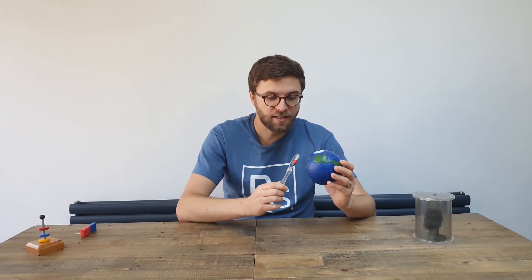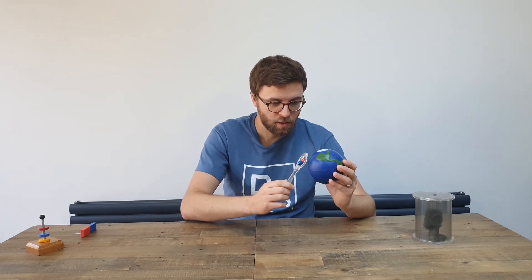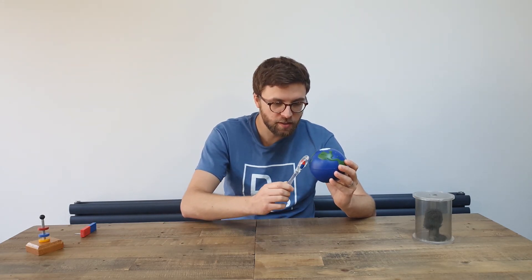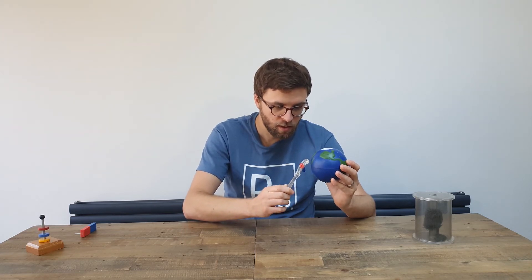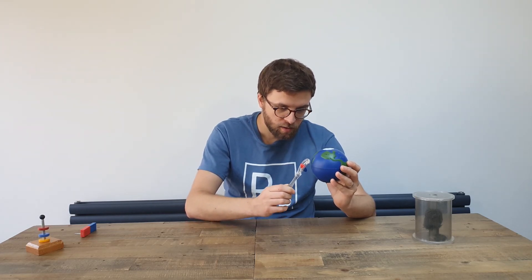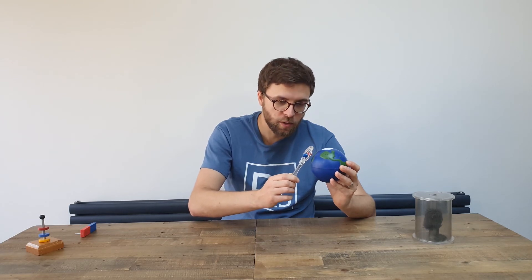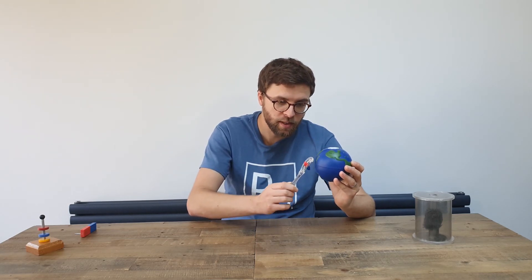The Earth has a magnetic field and the compass needle always points in the direction of the Earth's magnetic field. Here you can see it rotating between north and south as we move between the hemispheres.